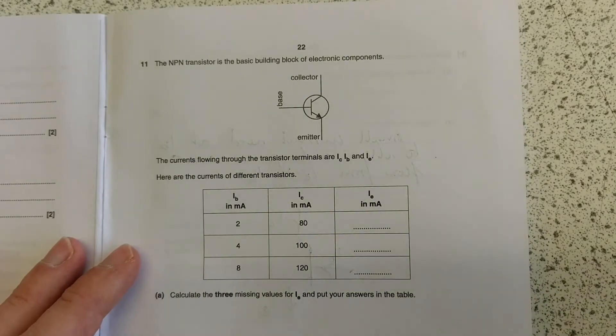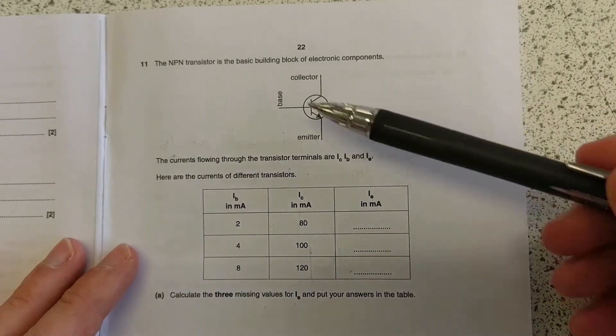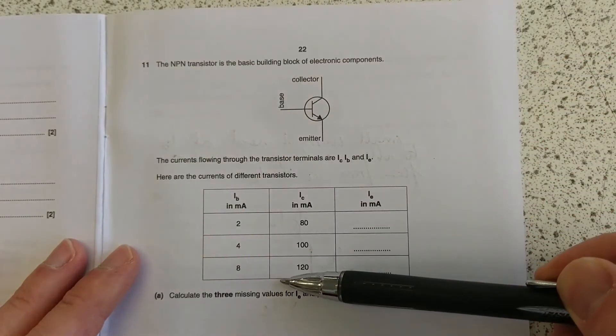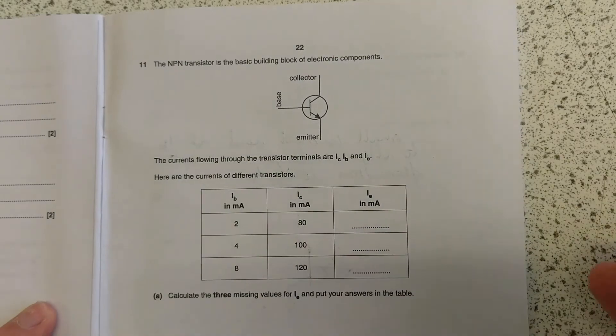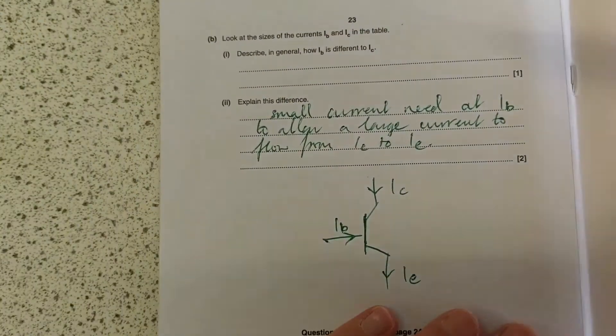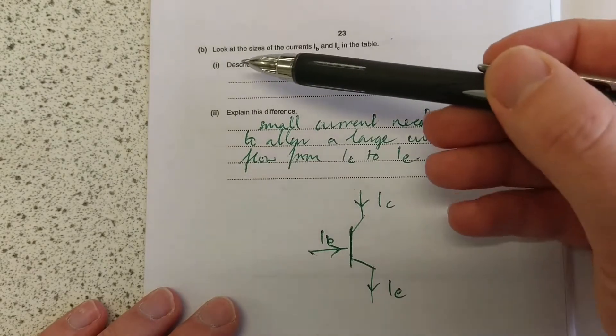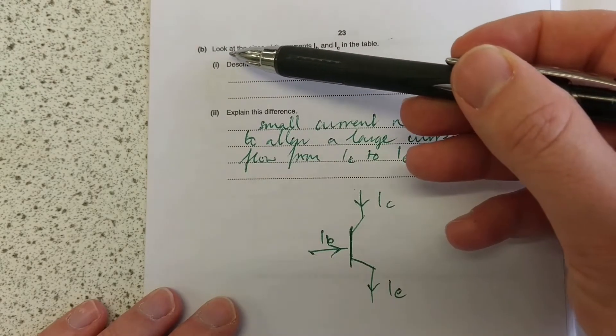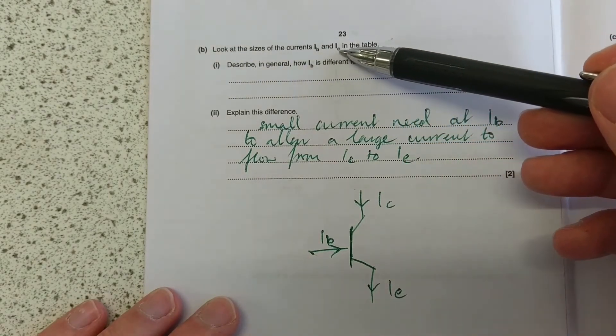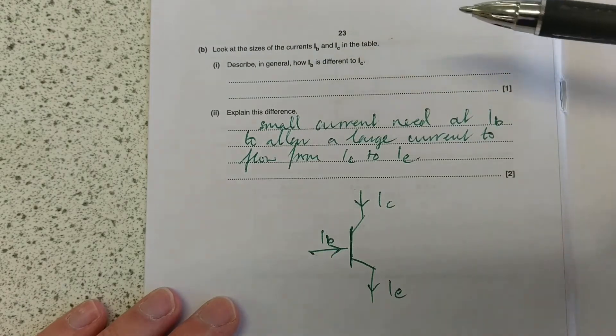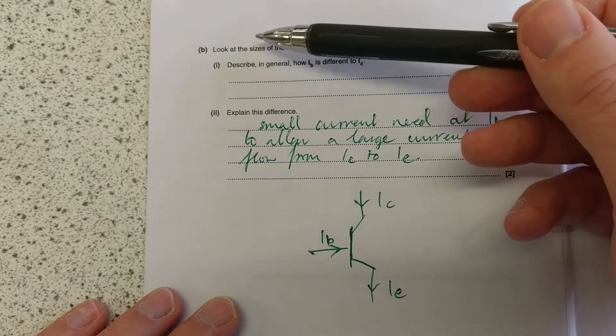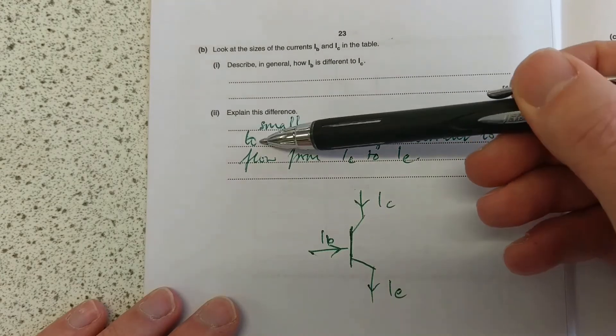So this is something really important about the way questions are structured. We call this part the stem of the question, and then this is the first part. This is the second part, and these are like sub-parts. So essentially, because this is written B, look at the sizes of the currents IB and IC in the table. We know this information is useful for this part and this part.